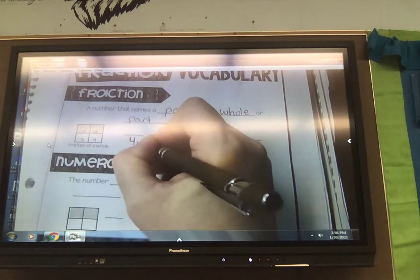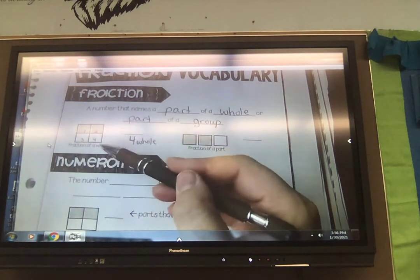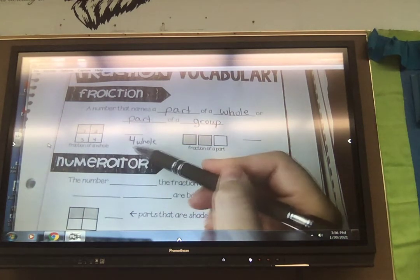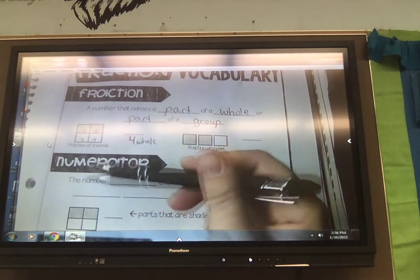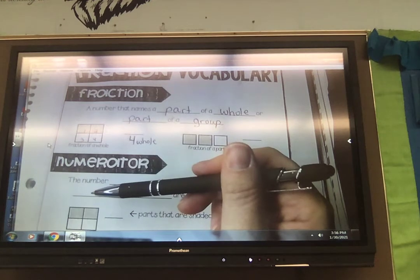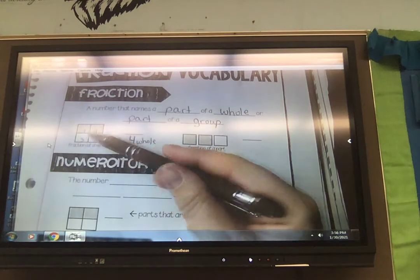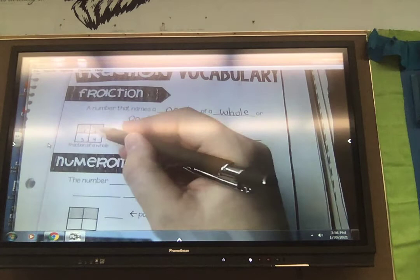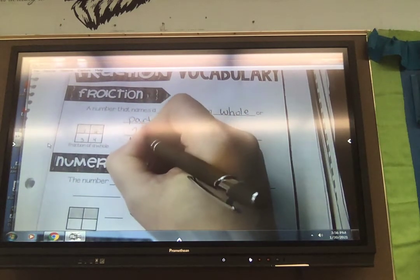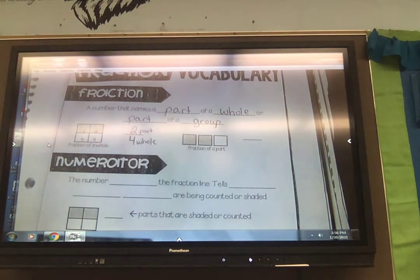That total number is always going to go on the bottom. That is how many pieces make up your whole. So I want us to write four, because there's four parts. So that four makes up our whole shape. Now part of this shape is shaded, and part of this shape is not shaded. The fractional parts are the pieces that I have shaded. So there are two shaded parts.